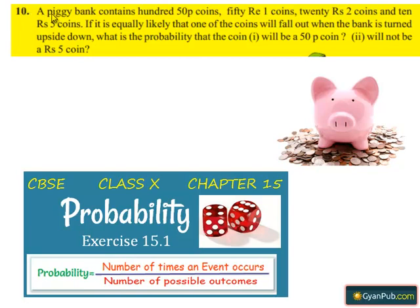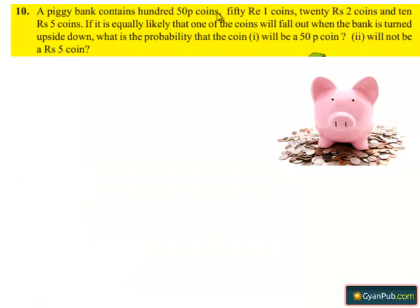Coming to question number 10. A piggy bank contains 100 fifty-paisa coins, 50 one-rupee coins, 20 two-rupee coins, and 10 five-rupee coins. If it is equally likely that one of the coins will fall out when the bank is turned upside down, what is the probability that the coin: first, will be a 50 paisa coin; second, will not be a 5 rupee coin.